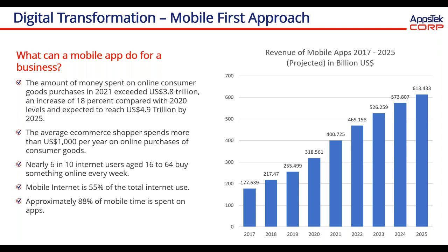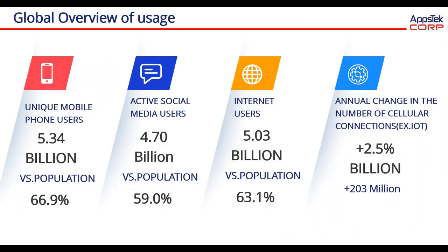Approximately 4.5 billion unique users are using mobile internet. The mobile phone is being used by 5.3 billion people, which is almost 66% of the global population. Total internet users are 5 billion, which is 63.1% of the population. Active social media users are 4.7 billion, which is 59%. Annually, 203 million new users are getting connected to mobile internet. This signifies how important mobile applications are and why the mobile app has to be the first priority for businesses.